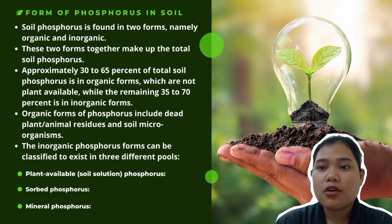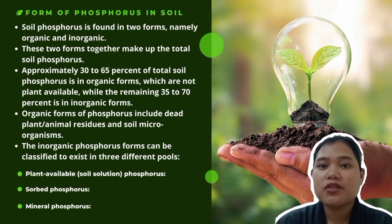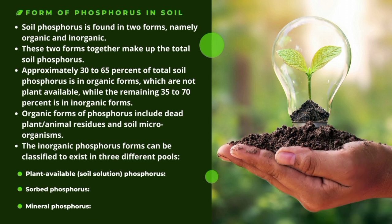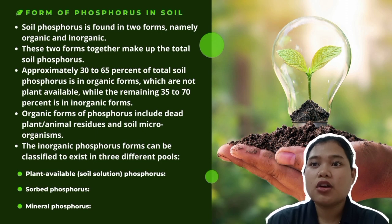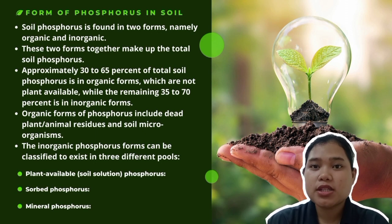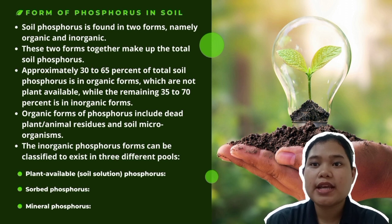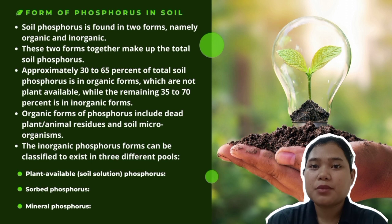The organic phosphorus can be classified into three different pools. The first is plant-available phosphorus. This pool is comprised of inorganic phosphorus dissolved in water or soil solution that is readily available for plant uptake.